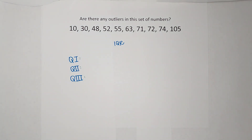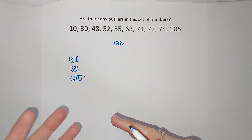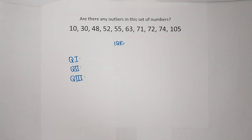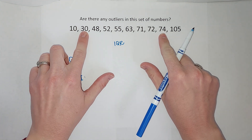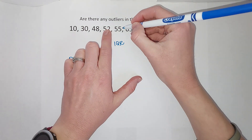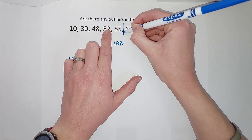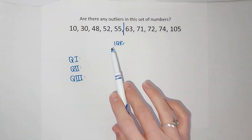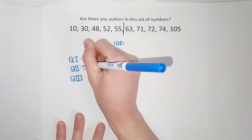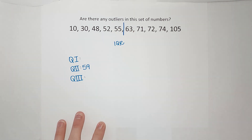I'm assuming if you've been making box and whisker plots you've been finding the quartiles, but if not, I'll link a video in the corner — I'm also going to do it here. To find the quartiles, I start by finding quartile two, which is the median or middle number. I count to the middle, and my median is between 55 and 63. To find the number in the middle of those, I add them together and divide by two, which gives me 59. That is my second quartile.